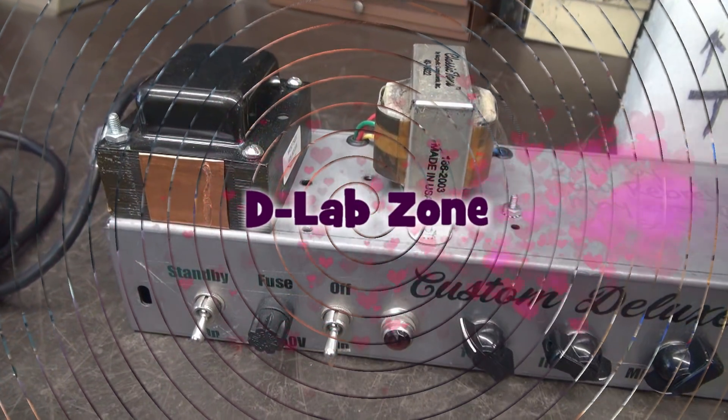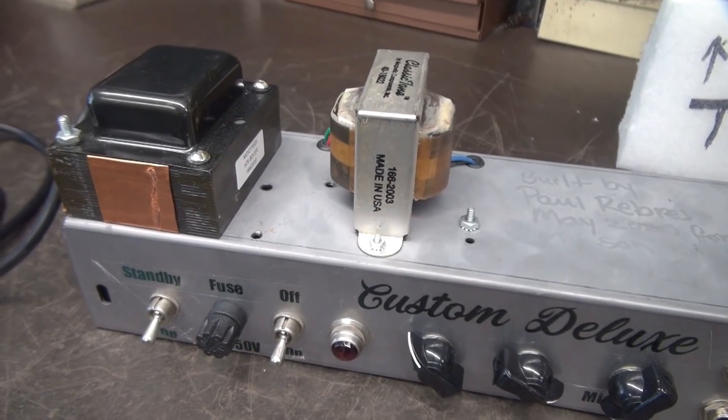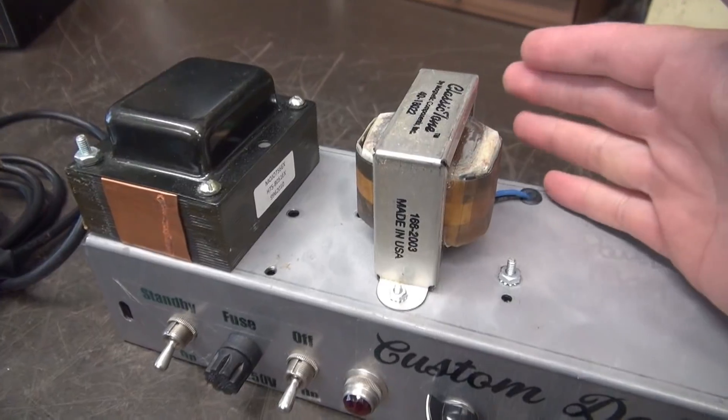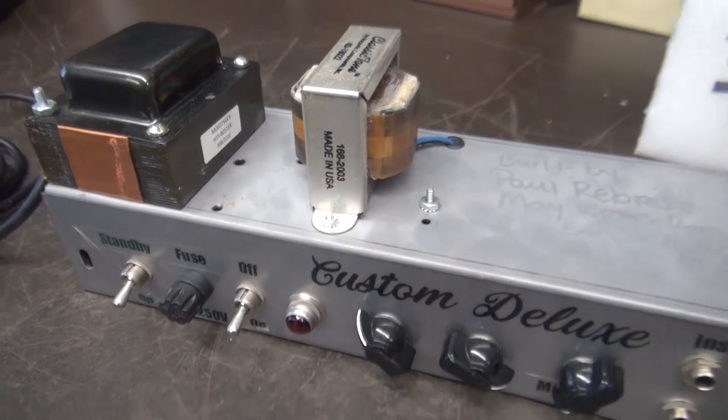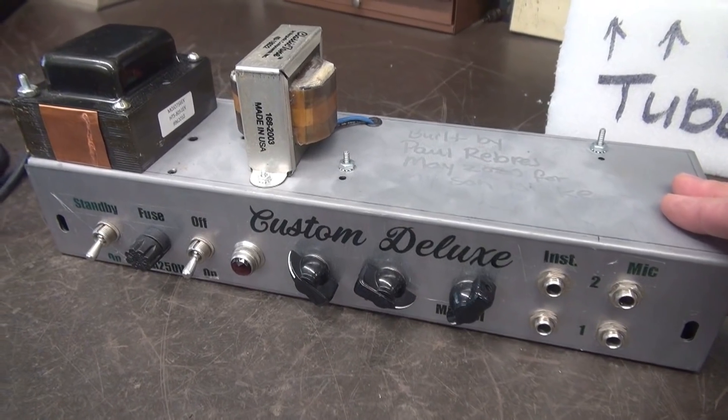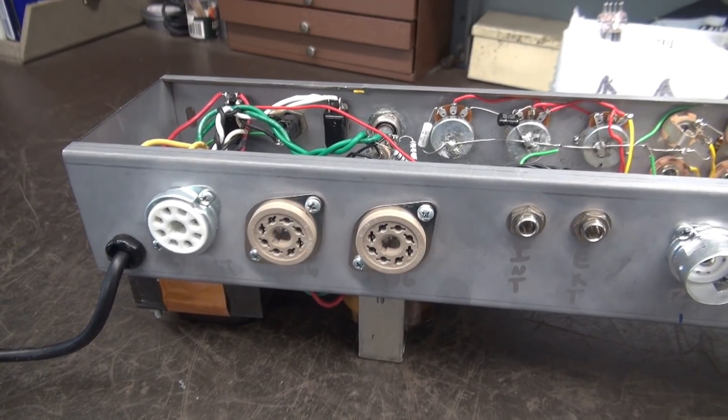Before I install the tubes or power this unit up, we're going to give it a good physical inspection. You see our power transformer, Classic Tone output transformer, front panel with custom decals—very nice. Let's flip it upside down and take a look at the chassis.